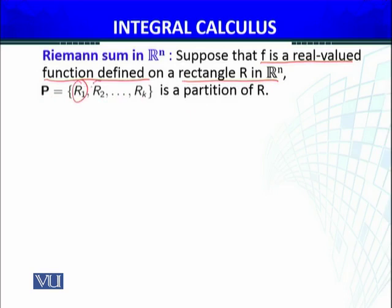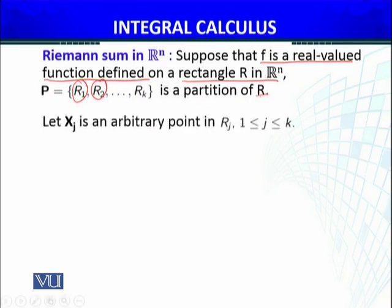I have a partitioning of that rectangle R. Let X_j be the arbitrary point in each sub-rectangle R_j, where j is indexed from 1 to k. So each sub-rectangle R, I have an arbitrary point.